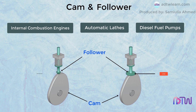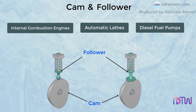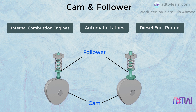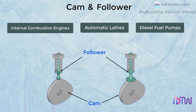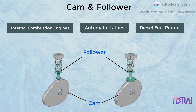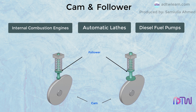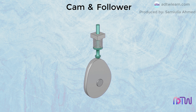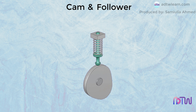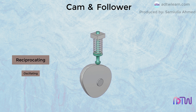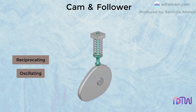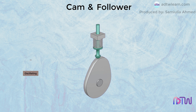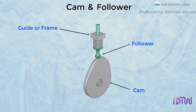A cam is a rotating element that gives reciprocating or oscillating motion to the follower. Cams are of various shapes and sizes based on the required applications. The cam and follower is a mechanical device used to achieve reciprocating or oscillating motion. This setup consists of three basic parts: the cam, the follower, and the guide or frame. The cam acts as a driving member, the follower acts as a driven member.